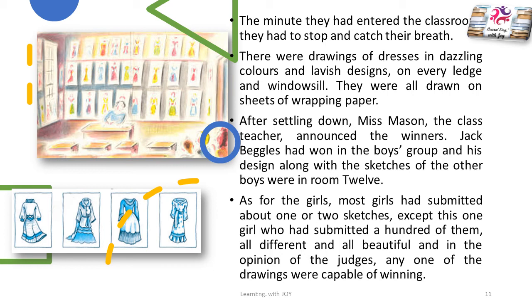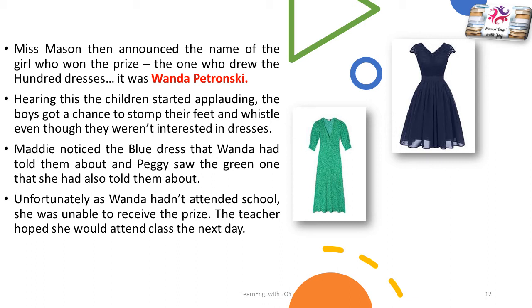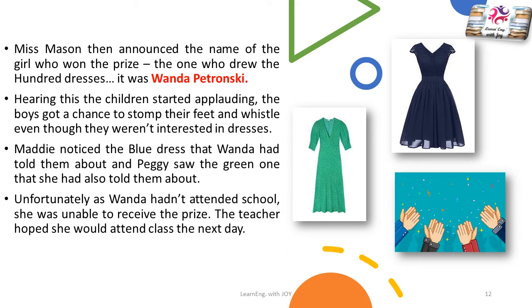As for the girls, most had submitted about one or two sketches, except one girl who had submitted a hundred of them — all different and all beautiful. In the opinion of the judges, any one of these drawings was capable of winning. Miss Mason then announced the name of the girl who won the prize — the one who drew the hundred dresses. It was Wanda Petronsky. Hearing this, the children started applauding; the boys got a chance to stomp their feet and whistle, even though they weren't really interested in the dresses. Maddie noticed the blue dress Wanda had told them about, and Peggy saw the green one. Unfortunately, as Wanda hadn't attended school, she was unable to receive the prize. The teacher hoped she would attend class the next day.